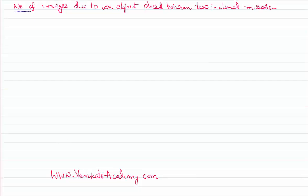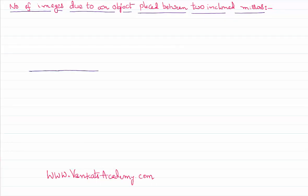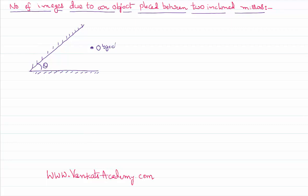We need to find out the number of images due to an object placed in between two inclined plane mirrors. This is one plane mirror, and this is one more plane mirror. These two plane mirrors are inclined at an angle theta, and we are keeping the object somewhere here. This object acts as an object for mirror one as well as mirror two, and the question is how many images are formed.